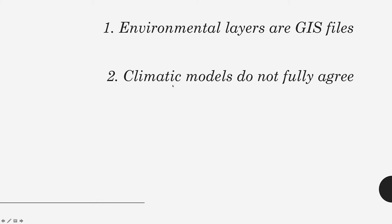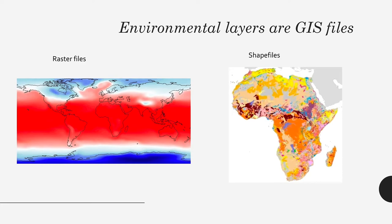There is a second issue I want to talk about: climatic models don't fully agree. But let's start with the problems of opening environmental layers. Environmental layers are GIS files, and not everybody knows how to work with them. There are two main types of GIS files: GIS files are geo-referenced maps or information, and these can be matrices — raster files — or vector files, the shapefiles.